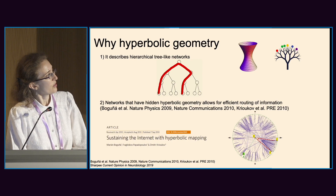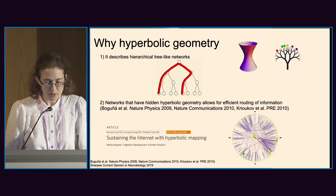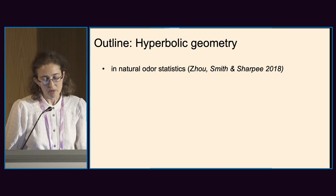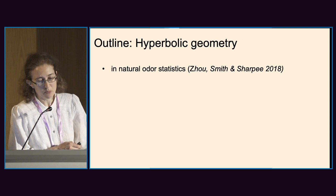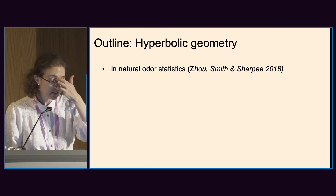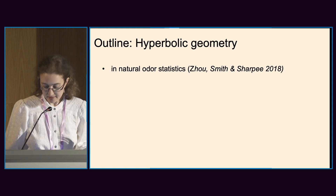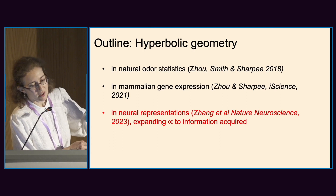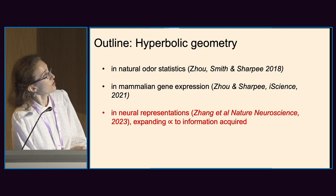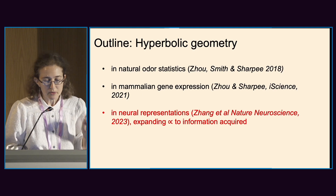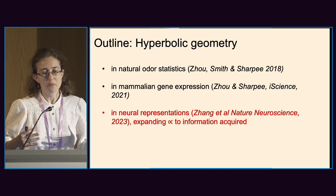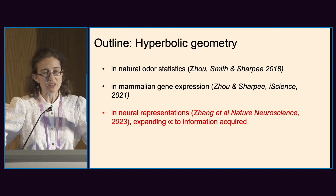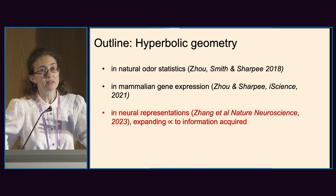Those simulations show how to sustain networks such as the internet with hyperbolic mapping. Today I will not be highlighting that previous work, but we have previously analyzed hyperbolic geometry in natural auditory statistics and in gene expression. Today I will summarize the natural stimuli work at the molecular level and focus on neural representations, sharing a new result that with experience these neural representations grow.